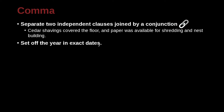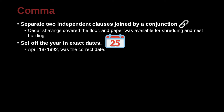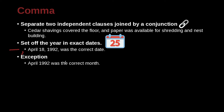You also use a comma to set off a year in dates. For example: 'April 18, 1992, was the correct date.' If this is inside a sentence, you need the comma between the day and year (American style), and you also need a comma after the year to set off the date. Here's an exception: 'April 1992 was the correct month' — no comma, because this is not an exact date. So we only set off the year when it is an exact date.